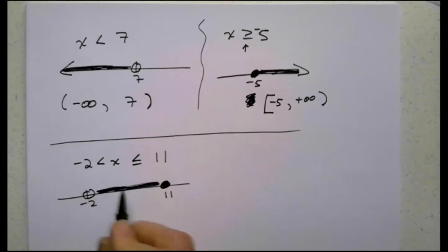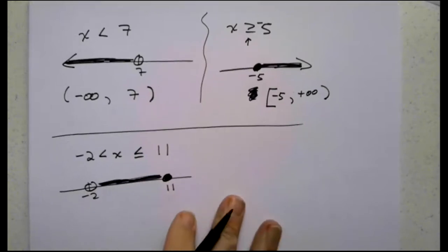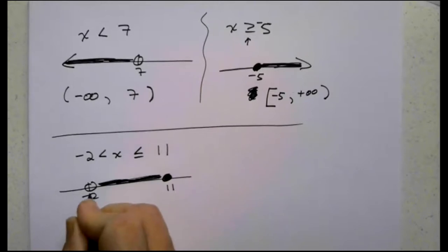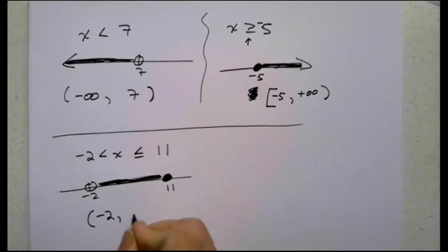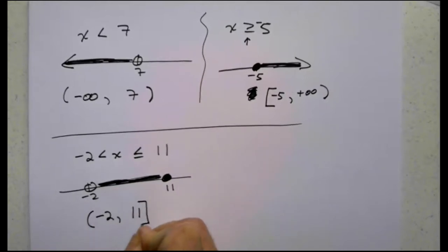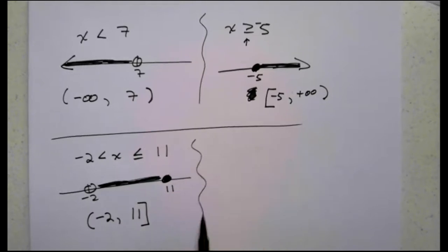So this is the set written that way. In interval notation that would be round bracket because we don't actually get there, negative 2, comma 11, square bracket because we do actually get there.